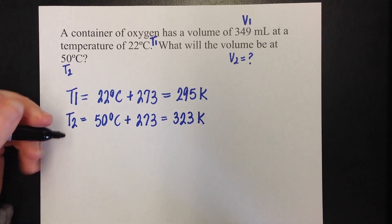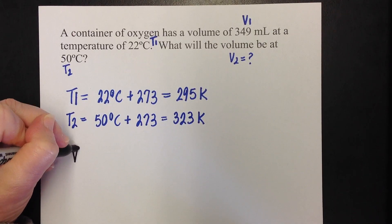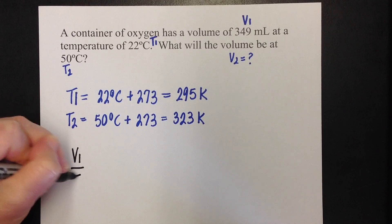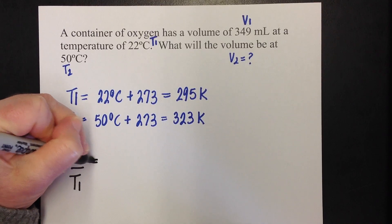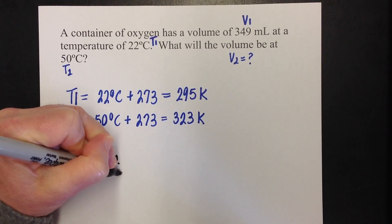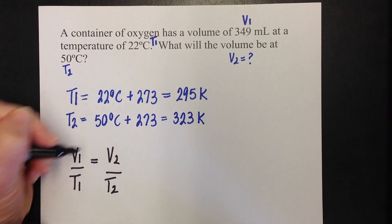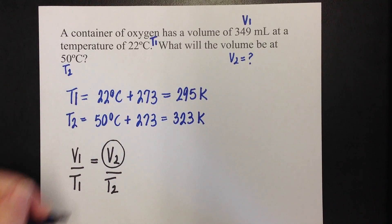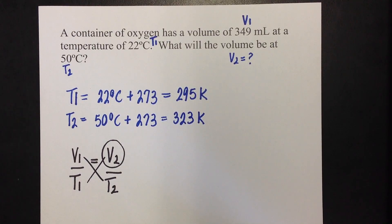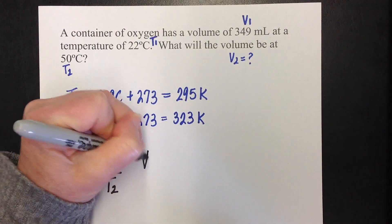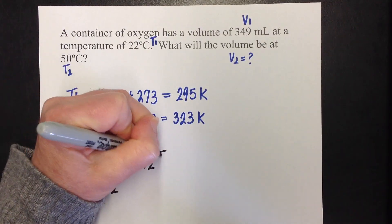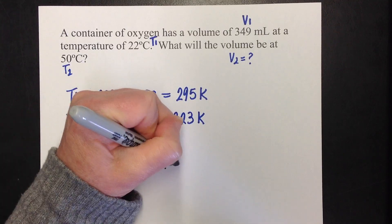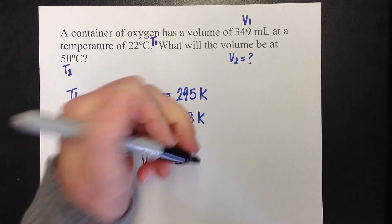So, let's write out Charles's law. V1 over T1 equals V2 over T2. I am solving for V2. To keep my life simple, I'm going to cross-multiply V2, T1, this times this, equals V1 times T2.